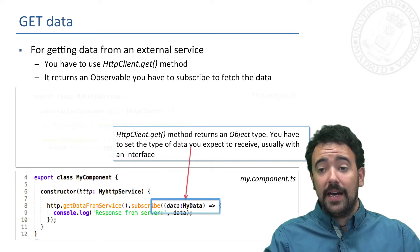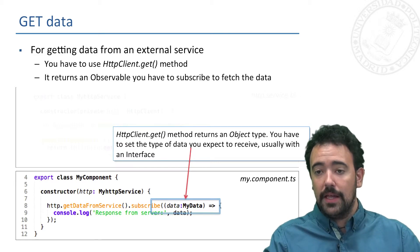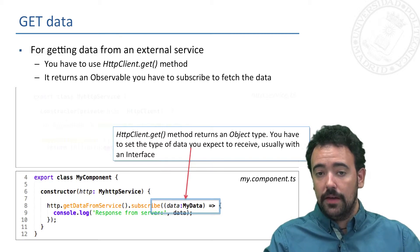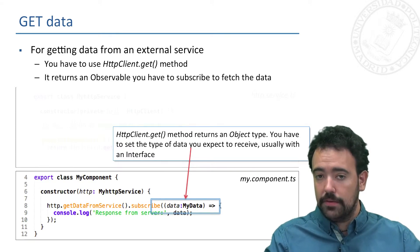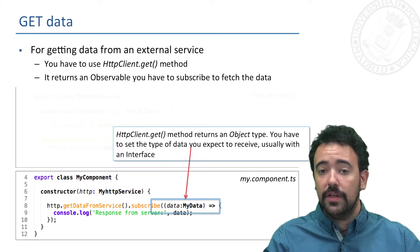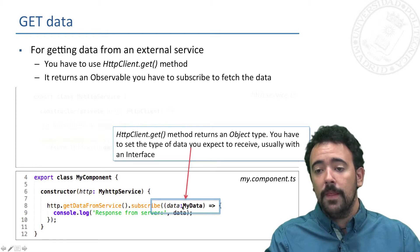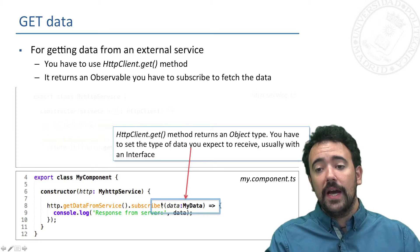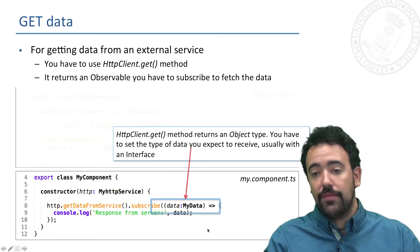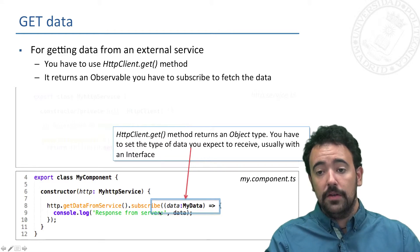An important thing is that the object this GET method returns when we subscribe to it is of type object, so we have to cast this object to the specific kind of data we expect to receive. This is usually done using an interface. For instance, if we expect to receive an object of type MyData, we specify that type and then we can manage the received data as needed in the application.